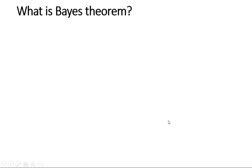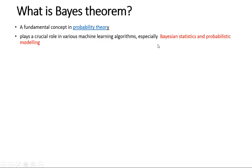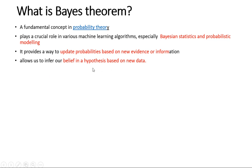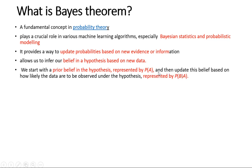Bayes theorem is a fundamental concept in probability theory. It plays a very crucial role in various machine learning algorithms like Bayesian statistics and probabilistic modeling. Bayes theorem mainly provides a way to update probabilities based on new evidence or information, and allows us to infer our belief in the hypothesis based on new data.